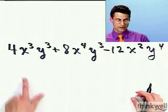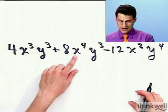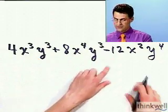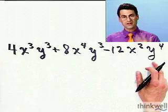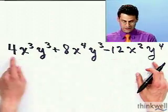So here's an example. Look at this polynomial: 4x³y³ + 8x⁴y³ - 12x²y⁴. Well, notice there is so much stuff that each of these monomial terms individually have in common. For example, they all have even coefficients.